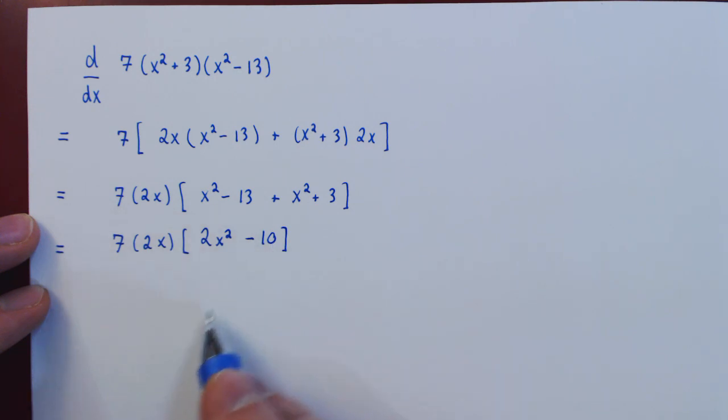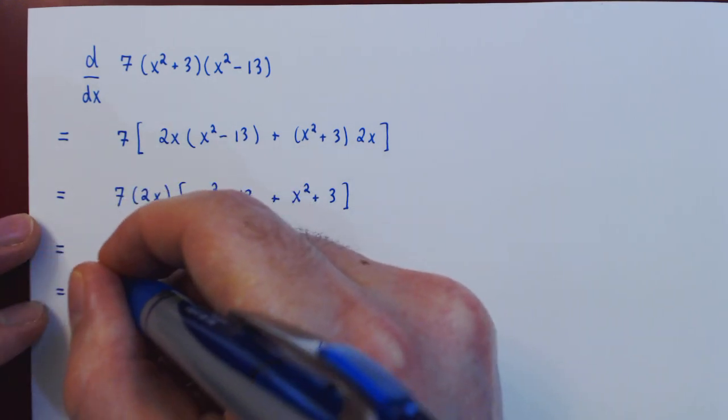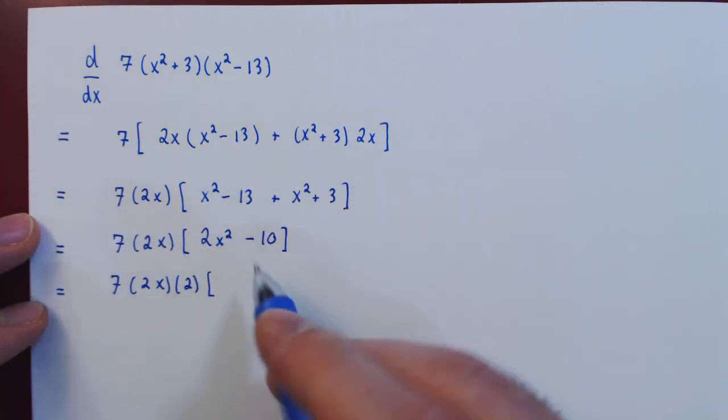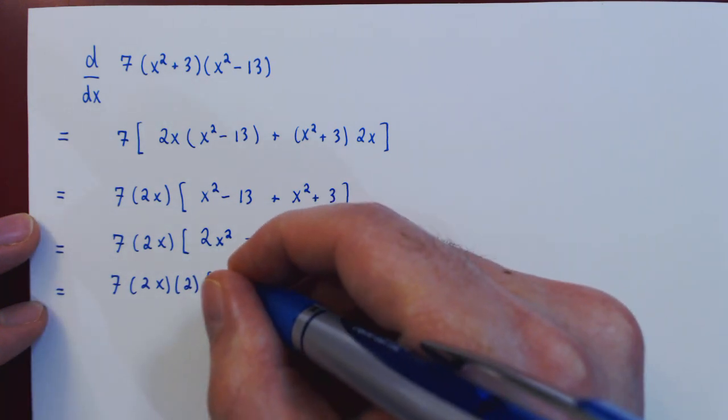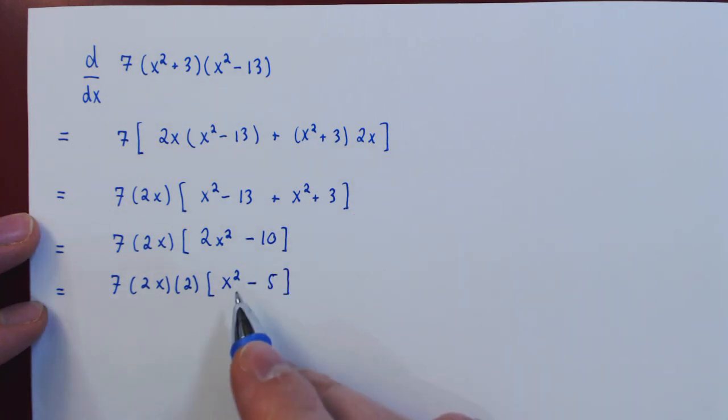So we have 7 times 2x times 2, and what remains is of course x squared minus 5. And now this is also interesting because although a quadratic polynomial, it is a difference of squares.